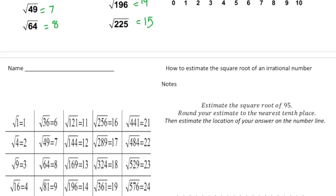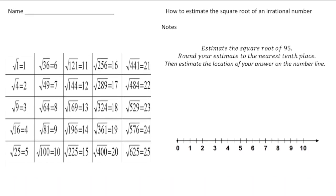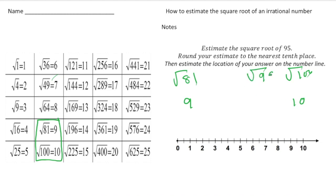Let's turn the page and try one more together. This time we want to estimate the square root of 95. Here's a table of the first 25 perfect squares and their square roots. The square root of 95 is going to be between — let's see — between the square root of 81, which is 9, and the square root of 100, which is 10. Now 95 is quite a bit closer to 100 than to 81. It's 14 away from 81 but only 5 away from 100, so it's going to be much closer to 10. My estimation for this one would be about 9.8.